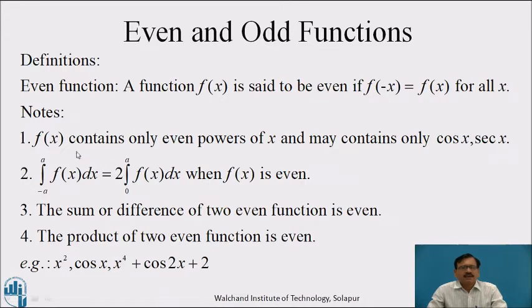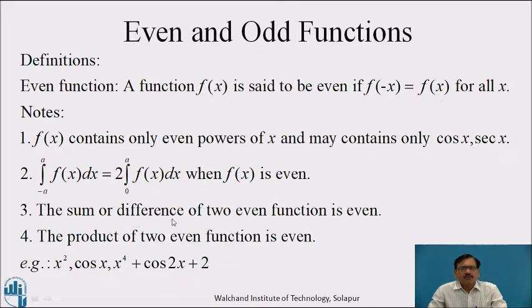We will note some points. First, f(x) contains only even powers of x and may contain only cos x and sec x. Second, the integration from minus a to a of f(x) dx equals twice the integration from 0 to a of f(x) dx when f(x) is even — this is a standard theorem of definite integrals. Third, the sum or difference of two even functions is even. Fourth, the product of two even functions is even. For example, x² cos x, and x⁴ + cos 2x + 2 are examples of even functions.